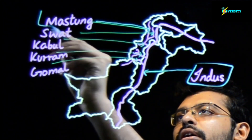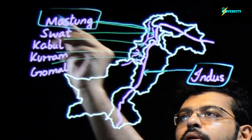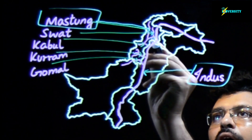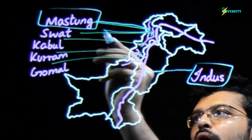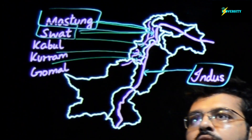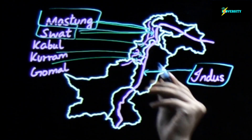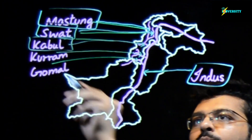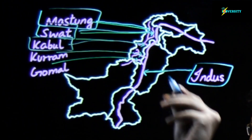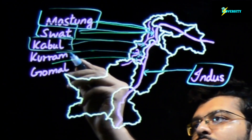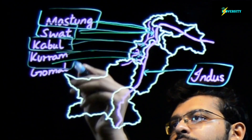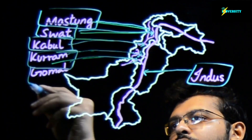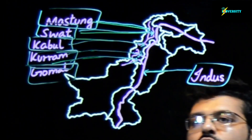The first one over here is River Mastuj. Then we have this one, which is called River Swat. This one is called River Kabul. This one over here is called River Kurram, and lastly this one over here is called River Gomal.